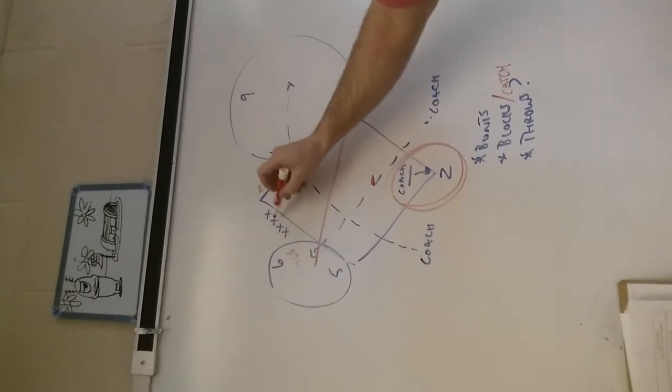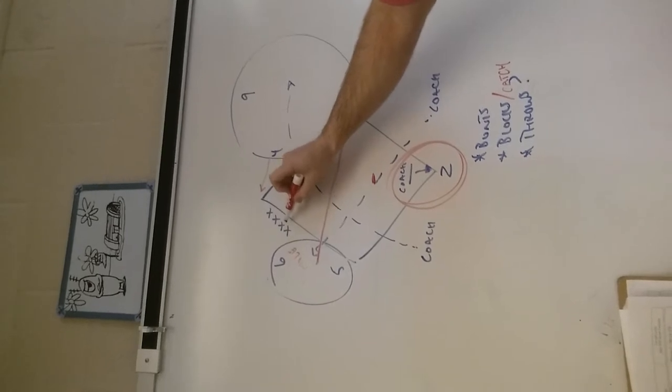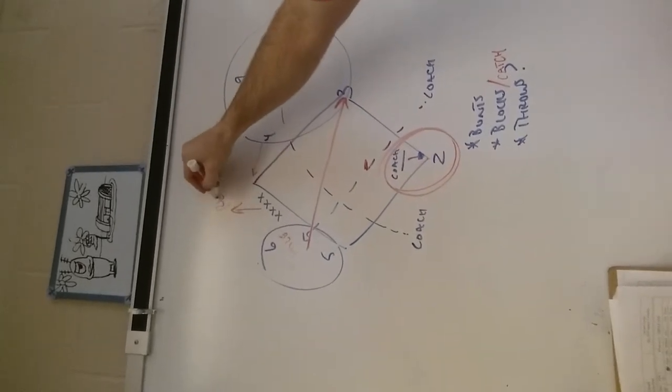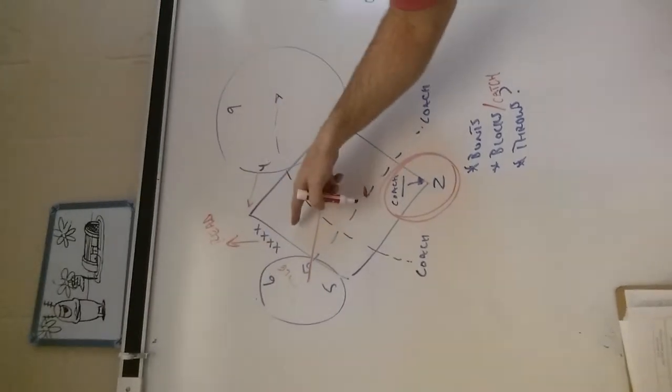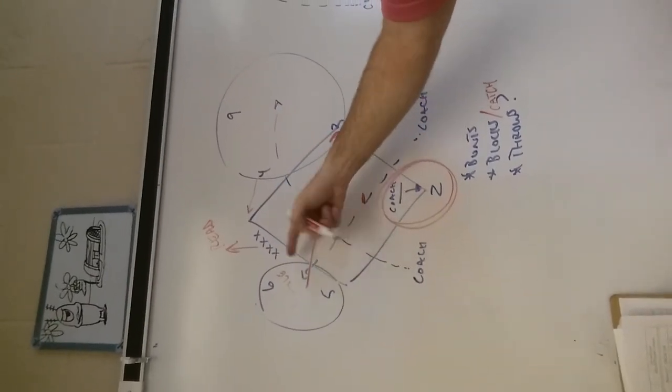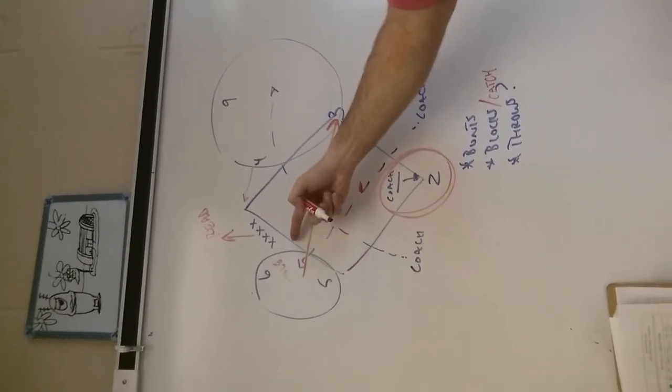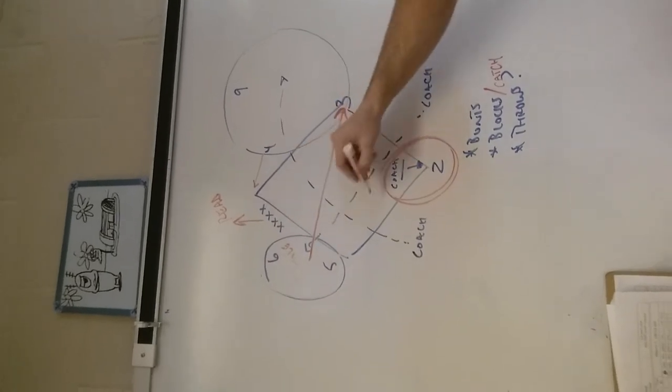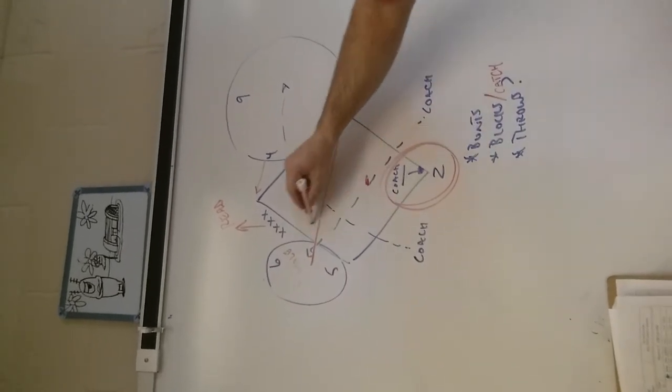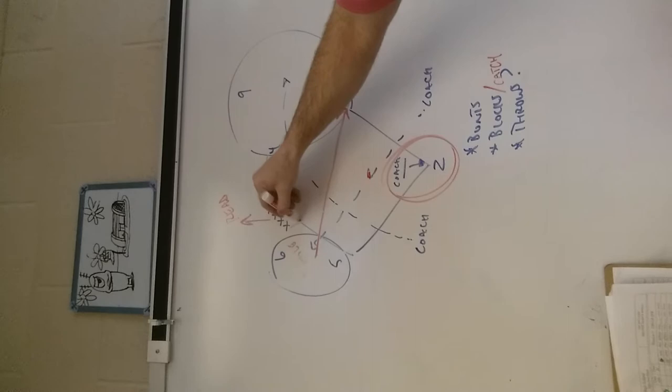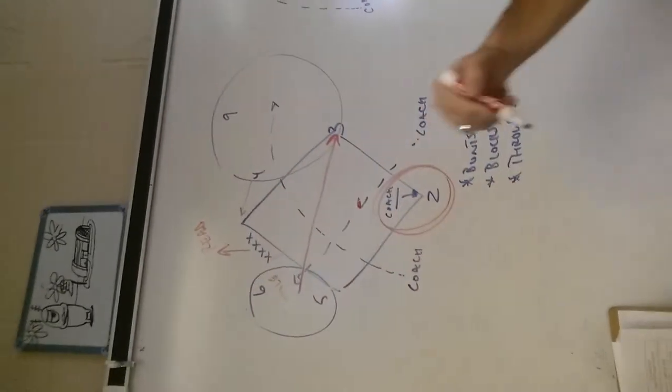Meanwhile, you've got base runners right here making this read. That decision is: should I go to third or should I hold? What we basically tell them is if you can make the ground ball go behind you, you can go. This is certainly something you can practice.